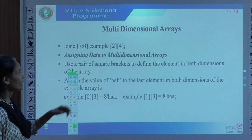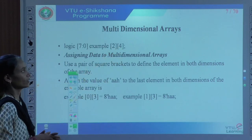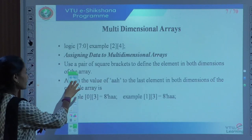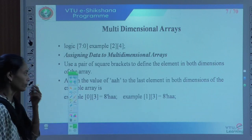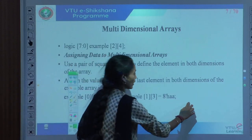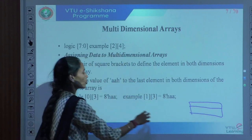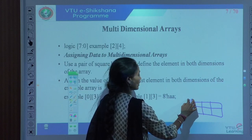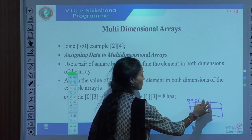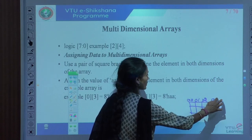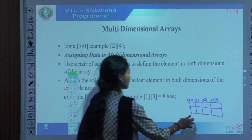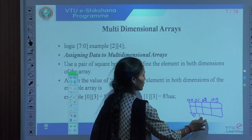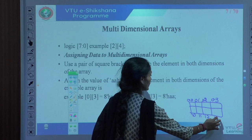For a multi-dimensional array declared as [2][4] of 8-bit, the assignment to a specific element uses row and column notation. For example, example[0][3] refers to row 0, column 3, and example[1][3] refers to row 1, column 3. We are storing value A into those locations — this is how we use multi-dimensional arrays and assign values by specifying corresponding row and column.